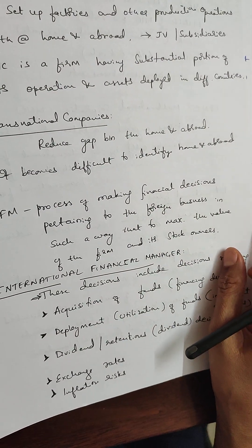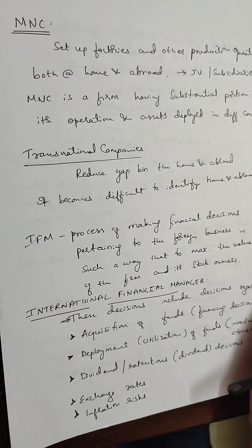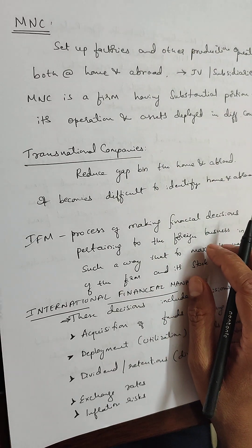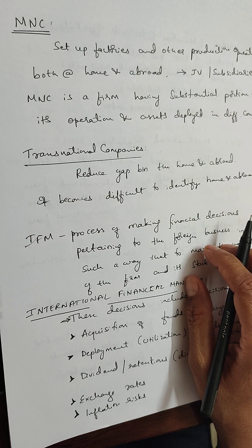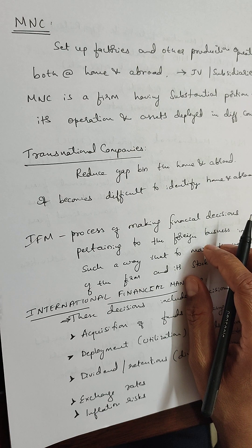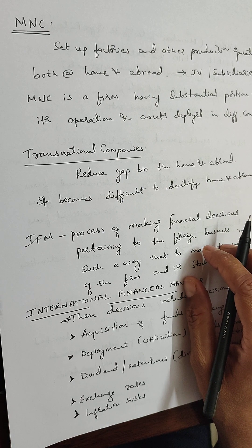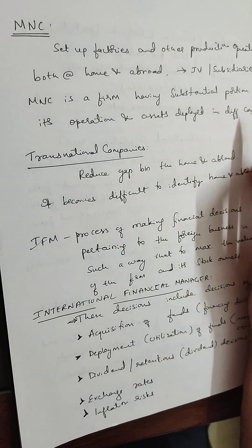MNC is a set of factories and other production operations both at home and abroad — including joint ventures and subsidiaries. MNC is a firm having a substantial portion of its operations and assets deployed in different countries.